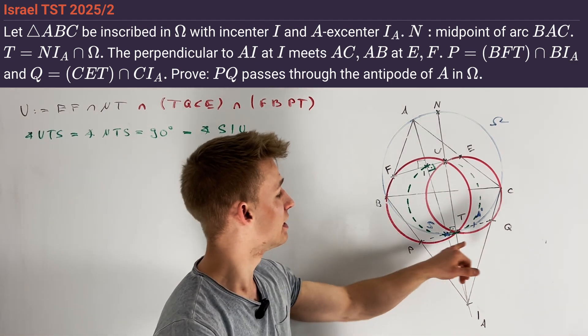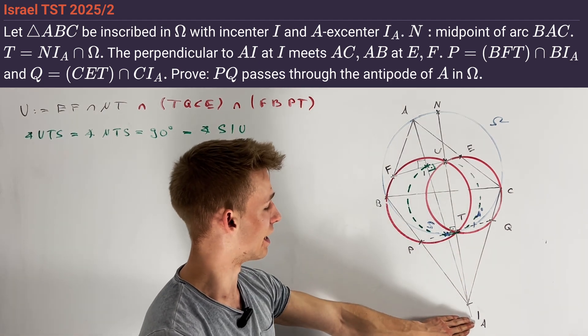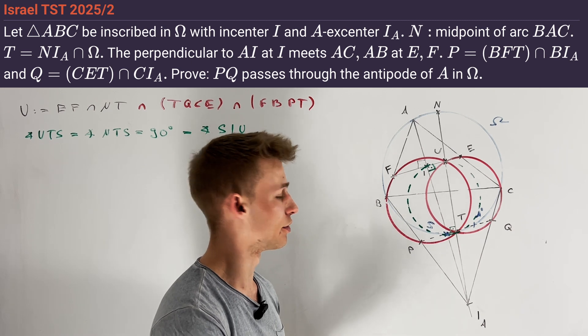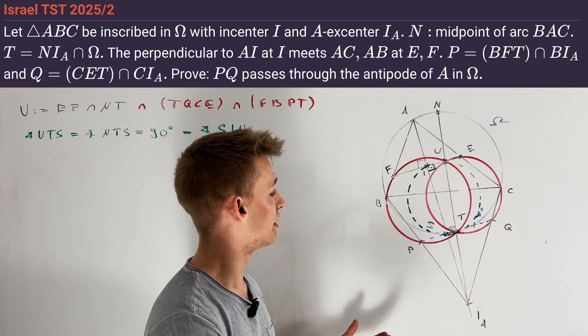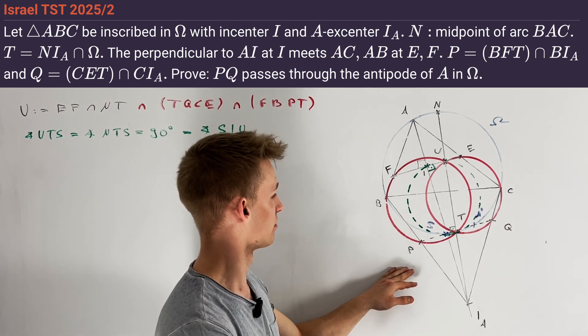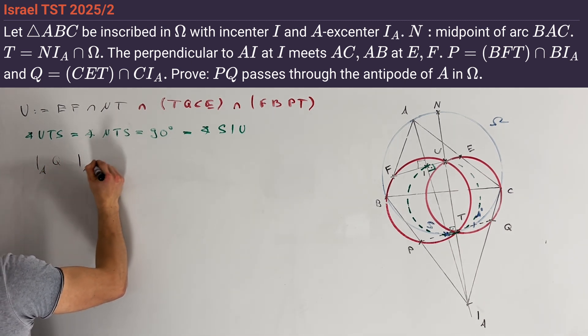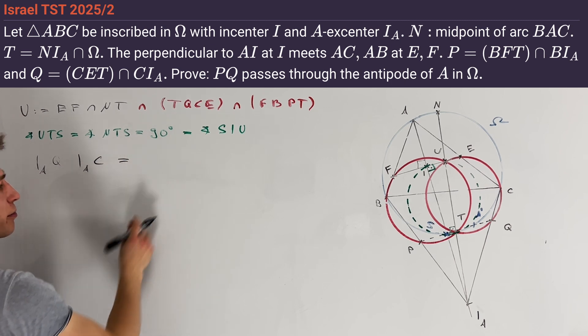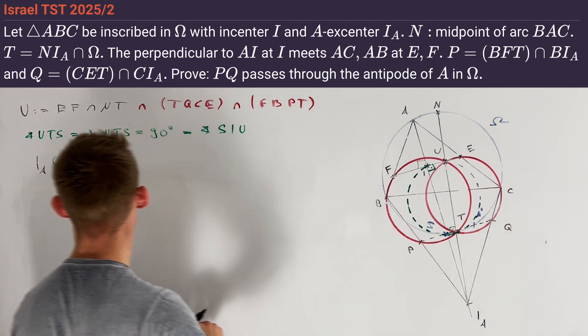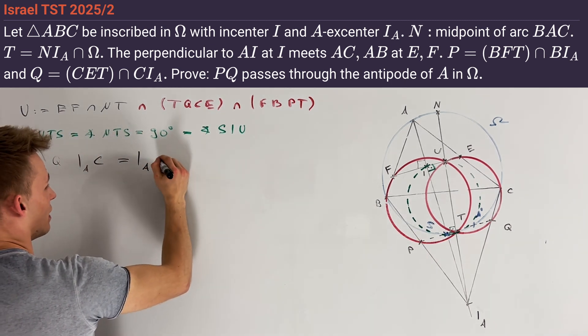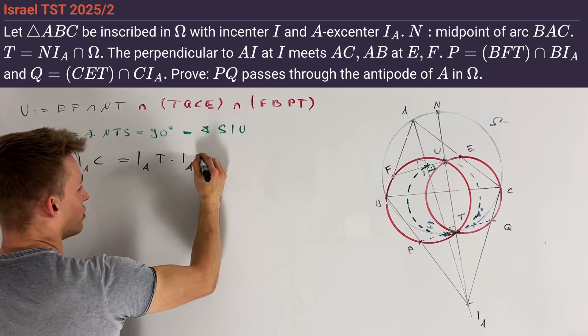Here, we have a lot of secants all passing through the point I_A. Therefore, we want to apply power of a point to get even more cyclic quadrilaterals. Using oriented lengths, we get that I_AQ times I_AC is equal, by power of a point on the right red circle, to I_AT times I_AU.